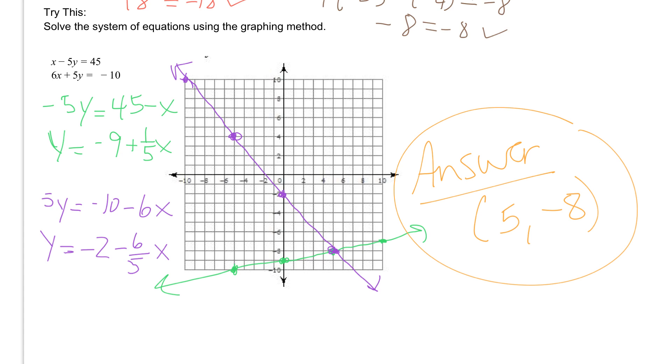If you did the try this correctly, you should have the following work done. If you don't have the answer 5 negative 8, then go back and make sure that you solved for y correctly. So here's the first one, here's the second one. And then check your graphs and make sure you graph them correctly. If you have any questions, let me know. Thank you.